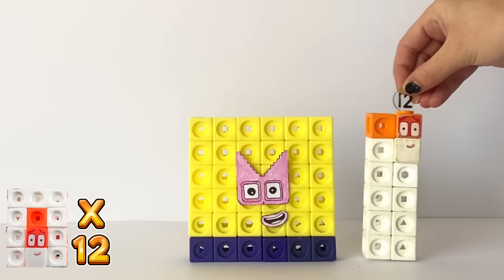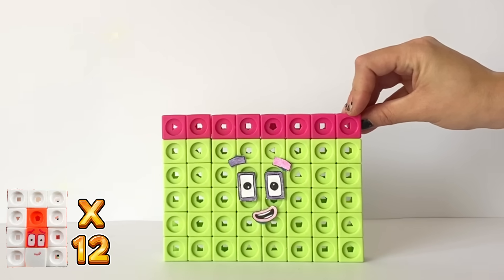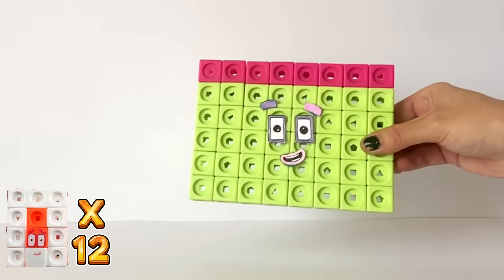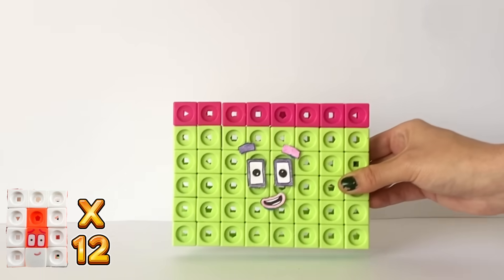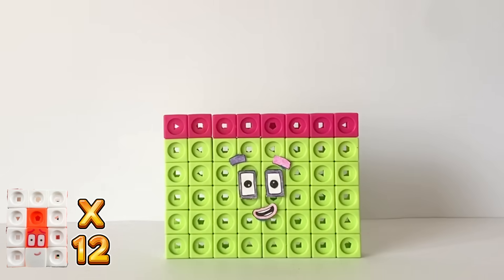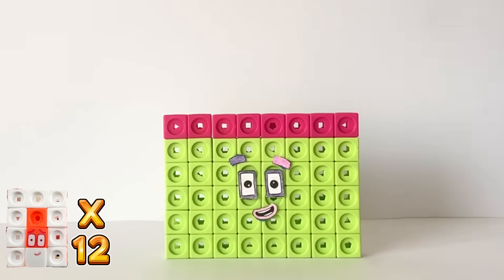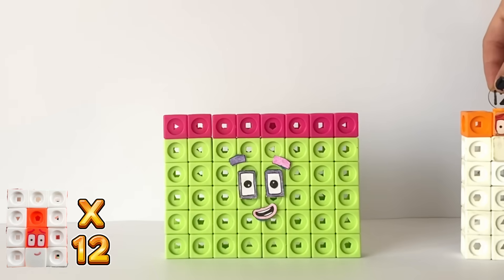Next we have 4 times 12 equals 48. NumberBlock 48 has rectangle eyes as they can make lots of rectangles. However, 48's eyes are purple and the eyebrows are pink and purple because 48 is also 6 times 8. So let's add another 12.